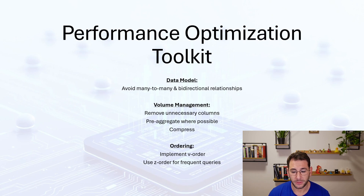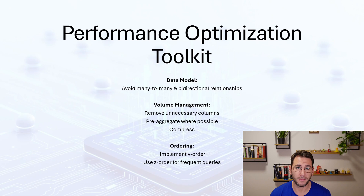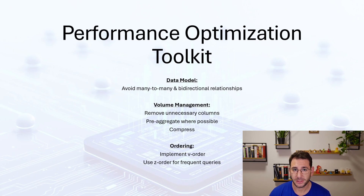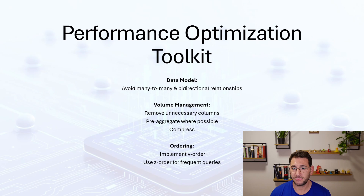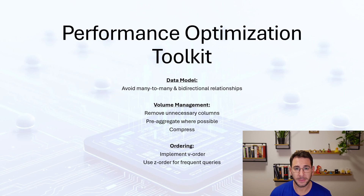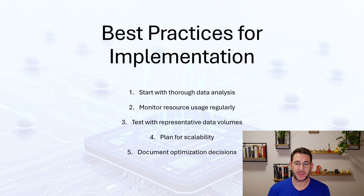Then there is zOrder, which applies clustering to columns so that queries run more performantly through data skipping. This is significant for columns that your end user queries more often. However, it does cost a complete rewrite of the table every time you apply it, and it is resource intensive in the transformation process — but the end user experience will be much better. For example, if your end user queries the region field many times, creating a zOrder on the region field would make a lot of sense. The data will be clustered and partitioned by region in terms of files in the background, and the user experience will be much better.